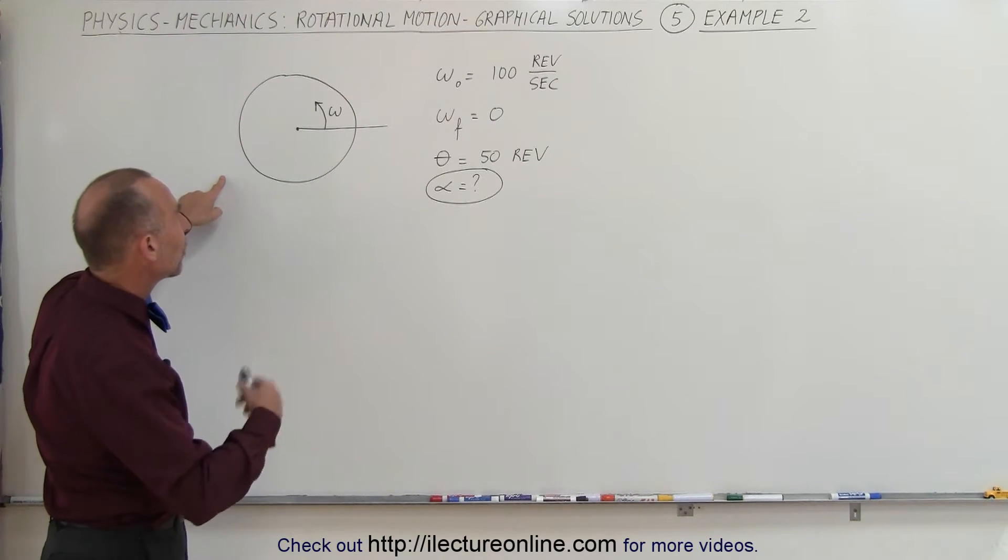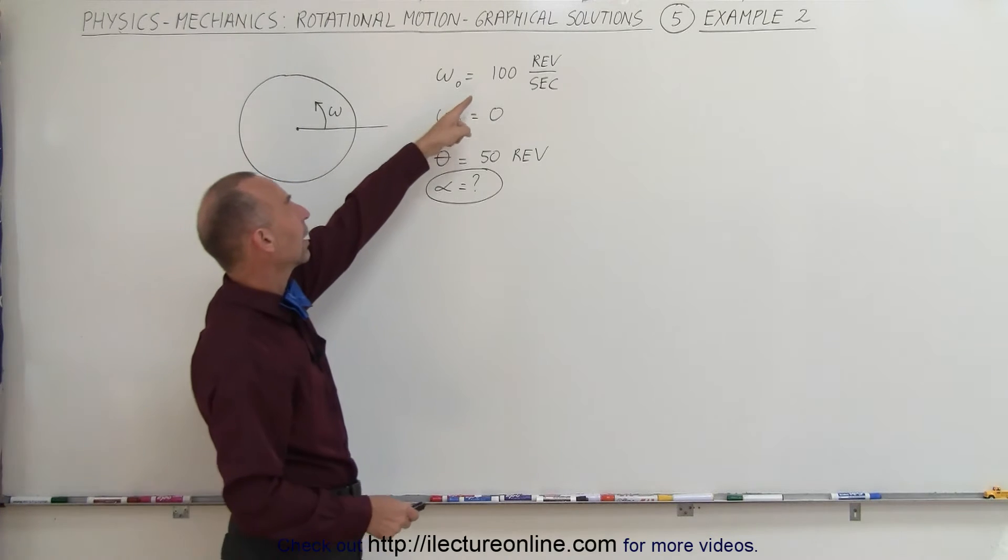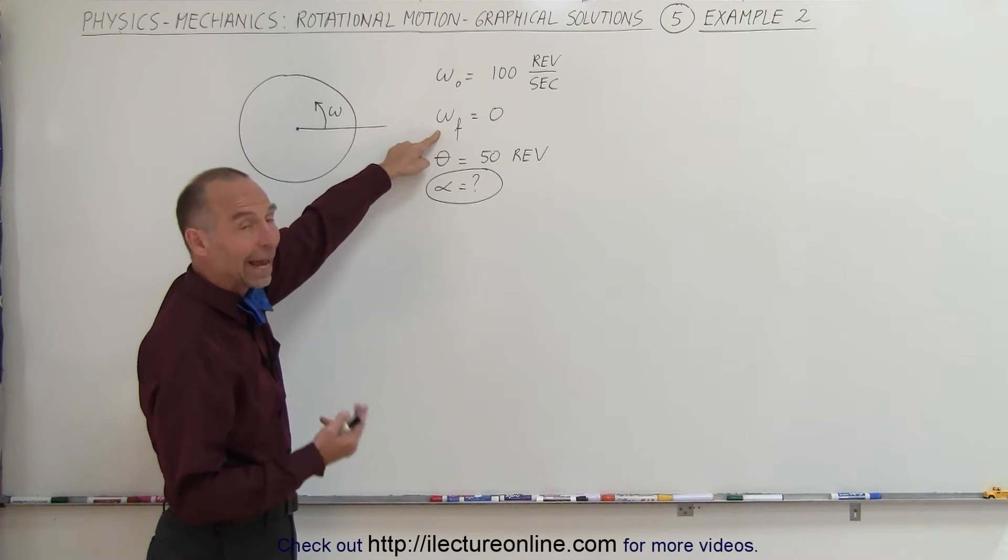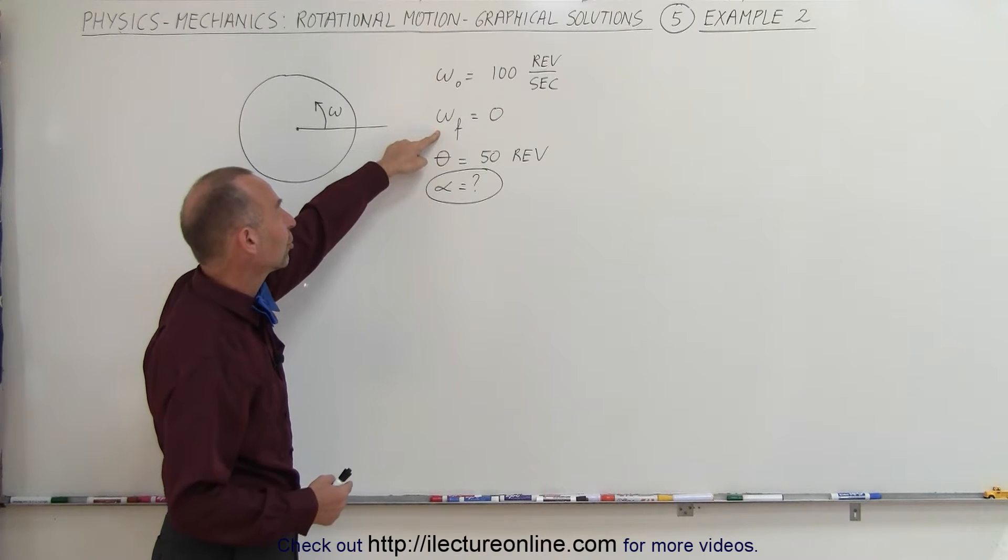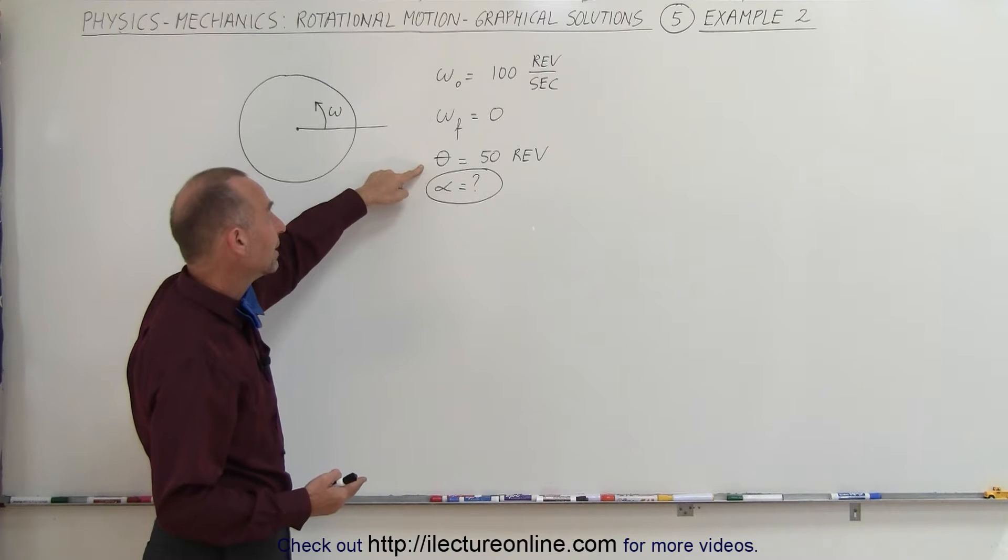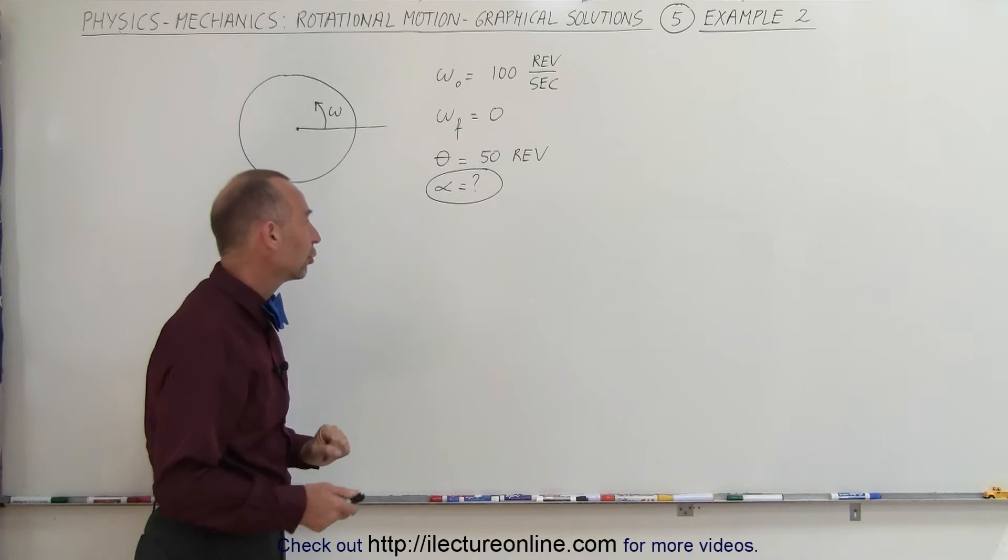In this case an object is already rotating at 100 revolutions per second. It will end up with an angular velocity of zero revolutions per second, and during that time, however long it took, the distance covered is 50 revolutions.